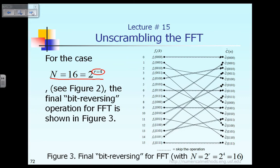To refresh your memory, if you remember in the earlier slides from lecture number 12, at that time we had equation 7, which basically says we have the unknown vector: c-tilde of 0, c-tilde of 1, c-tilde of 2, and c-tilde of 3.